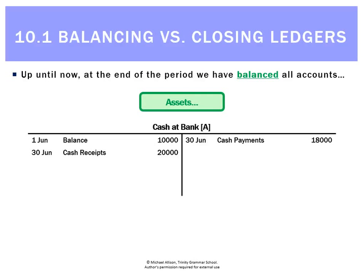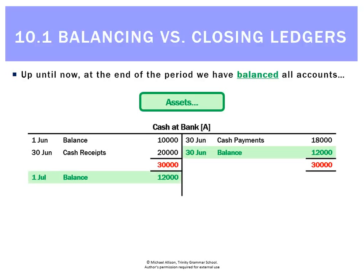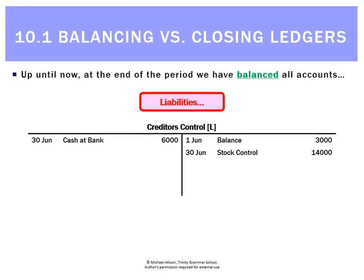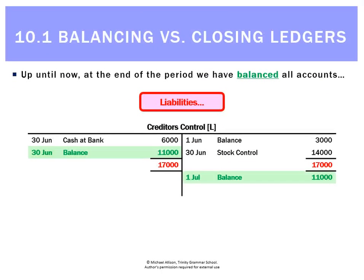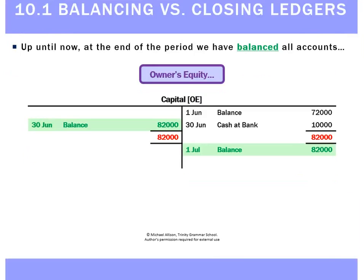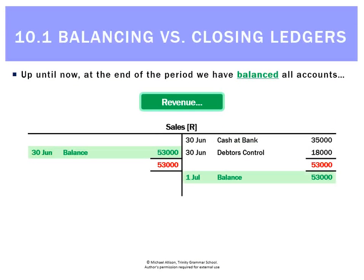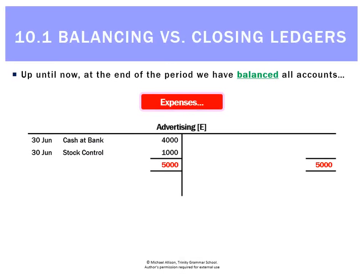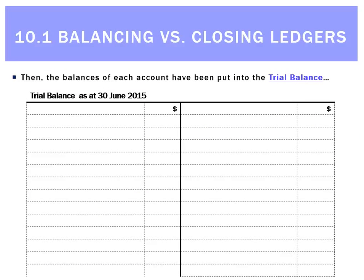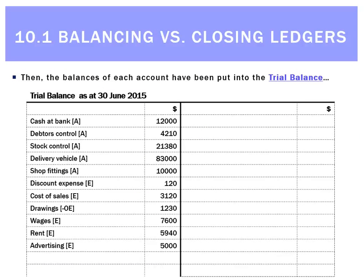So far, we've been balancing everything. Take an asset, for example — cash at bank. We balance that out and carry the balance forward on the 1st of July. For a liability — creditors control — we balance that out and carry the balance forward on the 1st of July. Owner's equity: balance it out, carry it forward. Revenues: balance it out, carry it forward. And expenses: balance it out and carry it forward on the 1st of July. Now we want to look at whether that's correct, or whether we should be doing something else, because that's affected our trial balance.